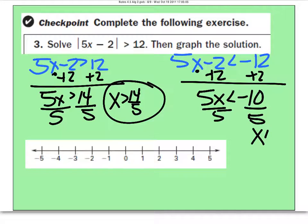This is x is less than negative 2. Now to graph, you may not know what 14 over 5 is. So you can just get your calculator out. Type 14 divided by 5. This is 2.8. So if it helps you, I'm going to jot this down. x is greater than 2.8.